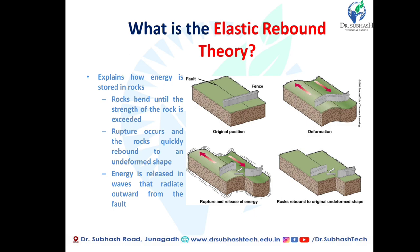The elastic rebound theory is the main reason for developing earthquake causes. It explains how energy is stored in rock. You can see in the four images of the elastic rebound theory: the rock bends until the strength of the rock is exceeded, rupture occurs, and the rocks quickly rebound to their undeformed shape. Energy is released in a wave that radiates out of the fault line.